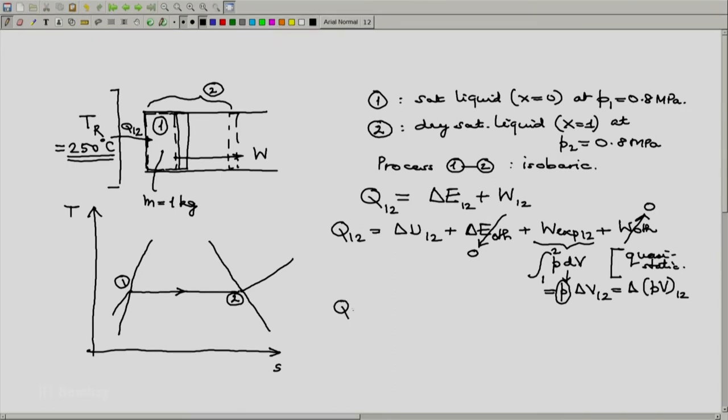And because P is constant, I can write this as delta of PV from 1 to 2. So Q12 now becomes delta U12 plus delta of PV12, which is delta of U plus PV, which is delta of H.